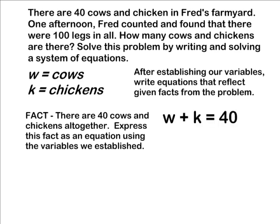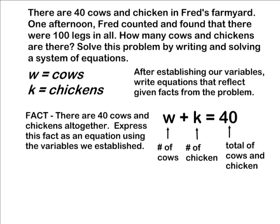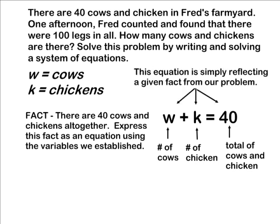Because we know the number of cows plus the number of chickens must equal 40, we can write an equation w plus k equals 40. This equation simply represents information given in our story problem.